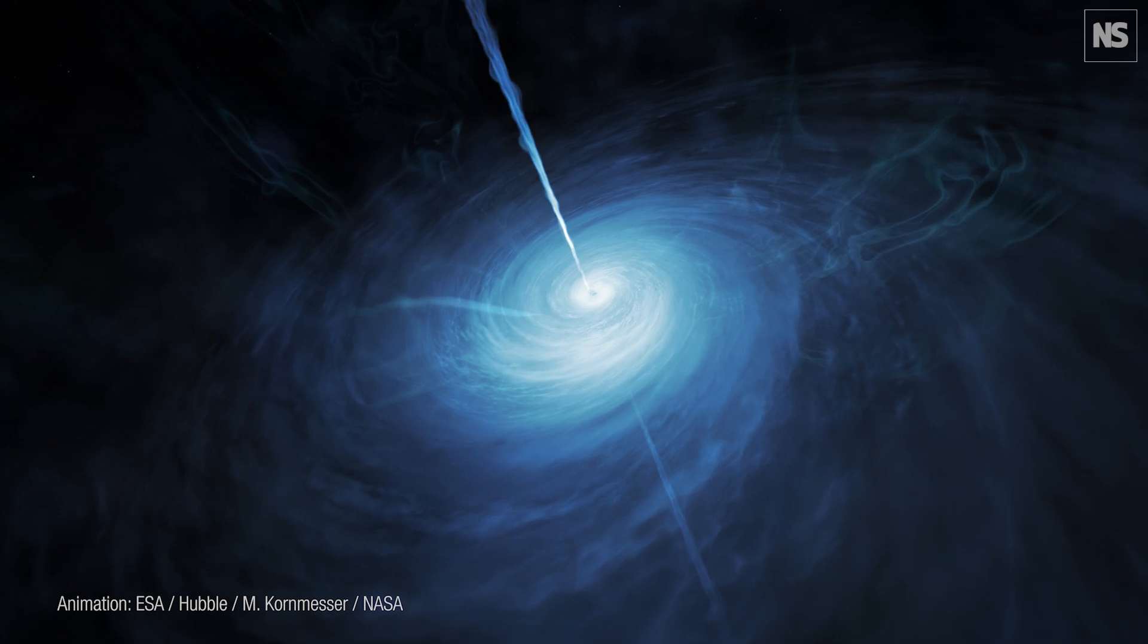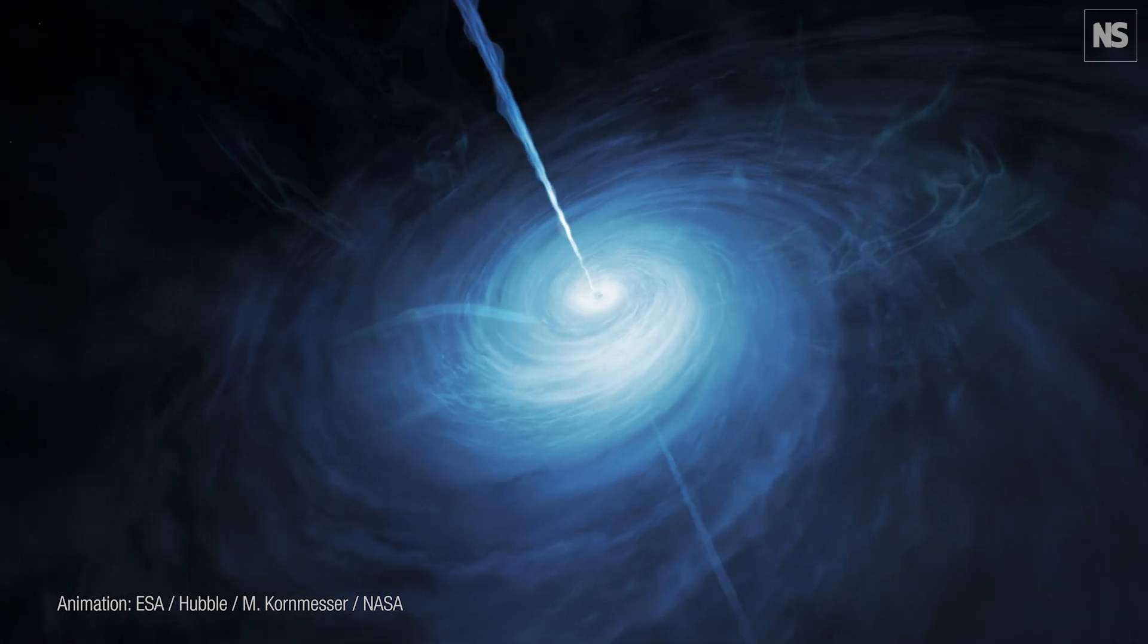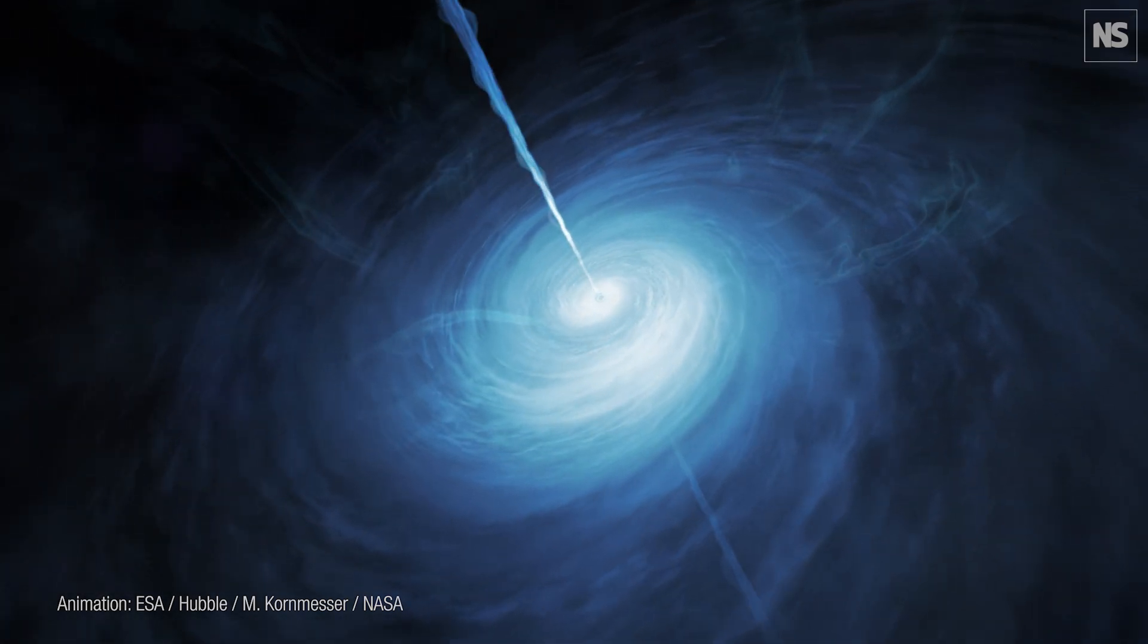These jets accelerate particles to close to the speed of light. Therefore the jets start to glow in synchrotron radiation and that is radiation that you can see with radio telescopes on Earth.